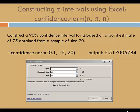Let's construct a 90% confidence interval for mu based on a point estimate of 75 obtained from a sample of size 20. We'll use the Excel function confidence.norm. Alpha is the complement of c. In this case, 10%, so 0.1.